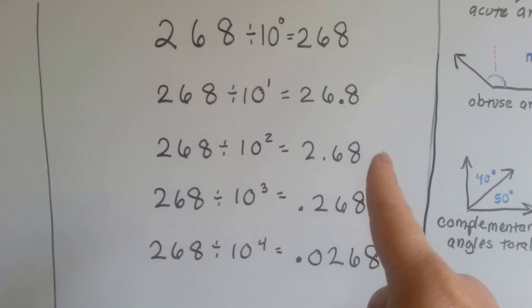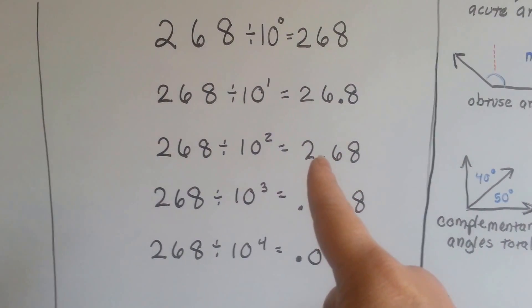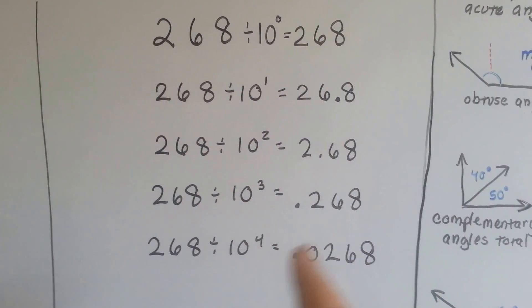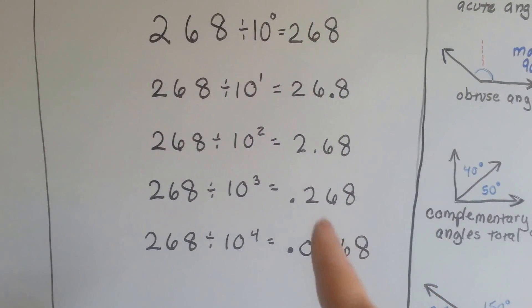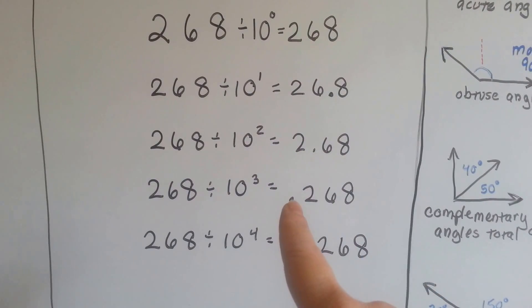To the second power, it moved 1, 2 in between the 2 and the 6. To the third power, it's now moved 1, 2, 3, and now it's in front of the 2.